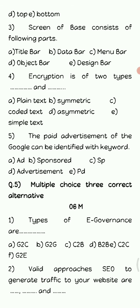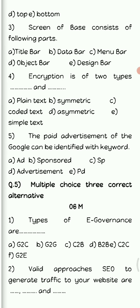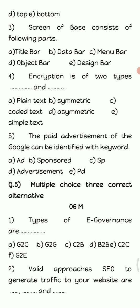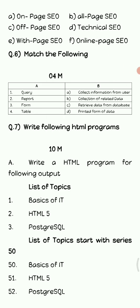Next, multiple choice with three correct options. Types of e-governance are — for e-governance, always look for where G appears. Option A: G2C, option B: G2G, and option F: G2E are the right answers. Valid SEO approaches to generate traffic to your website are: on page SEO, off page SEO, and technical SEO.